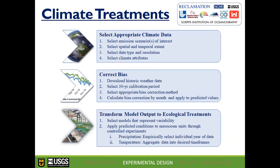I won't go into too much detail about my climate treatments — we've got a paper in review at Ecosphere on our methods. Essentially, we selected climate scenario data from global climate models, downscaled it to a usable format for our ecosystems, and selected RCP 4.5 data. There were 19 models that fit our criteria. We used point data located at Lubbock, Texas and Hastings, Nebraska — in the middle of the two regions — and bias-corrected the future data based on historic weather data.